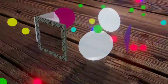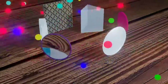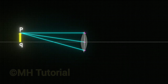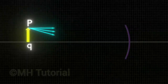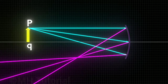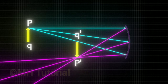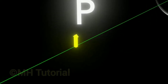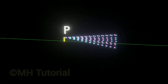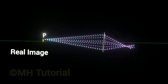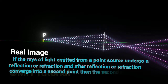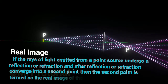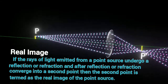So we have realized all types of image formation through 3D animation. Now, what is a real image? In situation 4 with the convex lens and situation 5 with the concave mirror, we see that the rays of light are meeting together — converging at one point — after reflection or refraction. The images formed in these procedures are called real images. That is: if rays of light emitted from a point source undergo reflection or refraction and converge into a second point, then that second point is termed the real image of the point source.